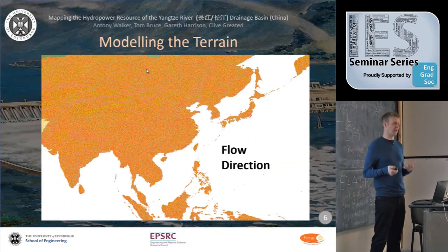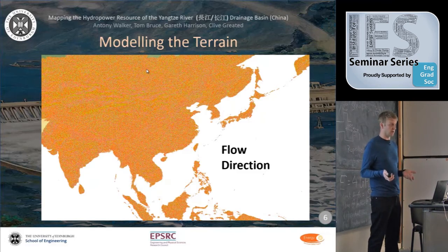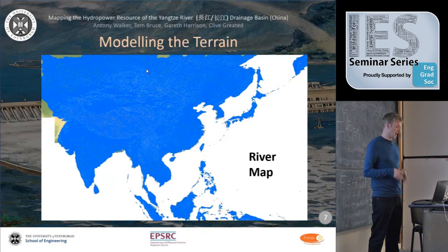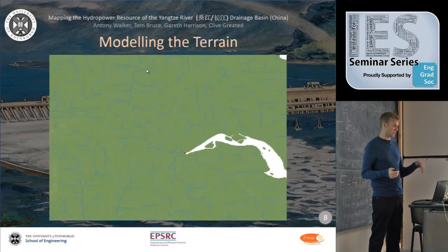Using the digital elevation model, we can establish how water flows across the landscape. We assume water flows in the steepest downhill direction in one of eight directions. From that we derive a flow direction model and then a river map, because water accumulates in catchment areas. Looking closely at the mouth of the Yangtze, you can see a normal river map as expected.